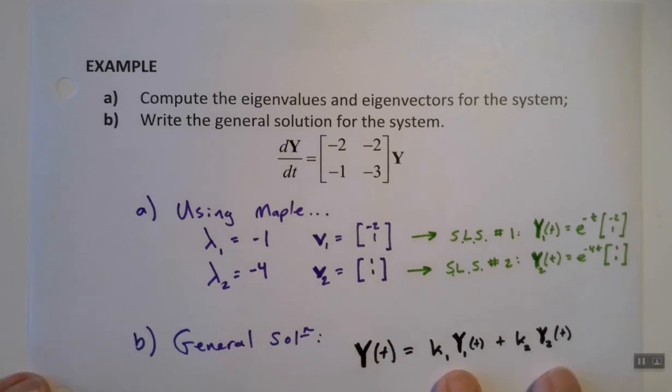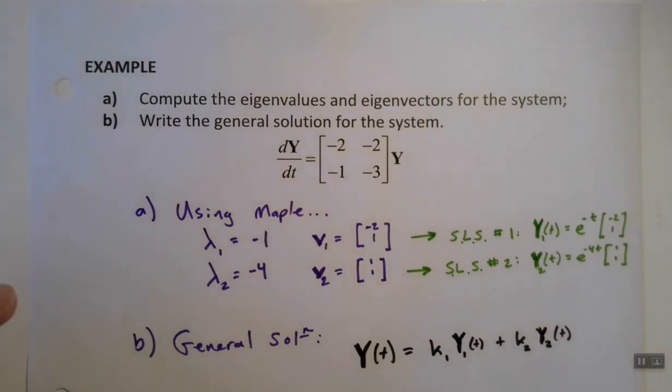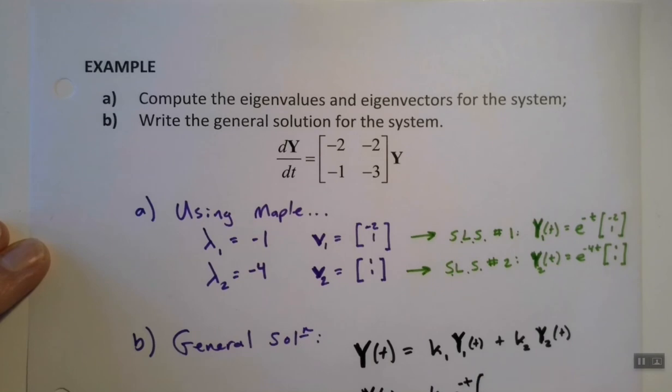And that's 100 percent true thanks to that superposition principle that we ran into earlier in Chapter 3. What that means for us in this particular case, or in this example, we can say that the general solution must look something like constant times e to the minus t times the vector negative 2, 1, plus another constant, no reason to believe they're the same constant, times e to the negative 4t times the vector 1, 1.